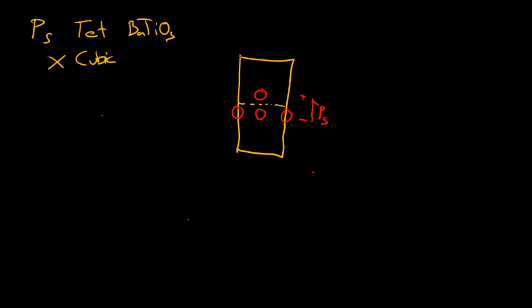So if we electrode this — and obviously when we have a real material, we're going to have all these stacked together — and we apply some voltage, what happens? Let's say we apply a positive voltage and a negative voltage. The positive is going to go down and the negative is going to go up. Therefore, the material is going to shrink.